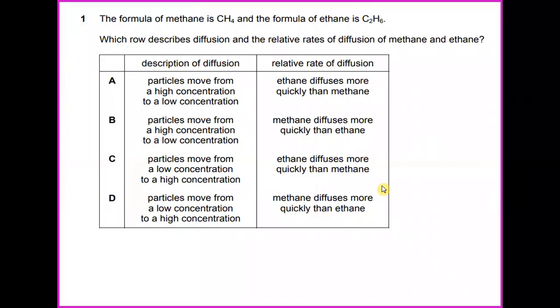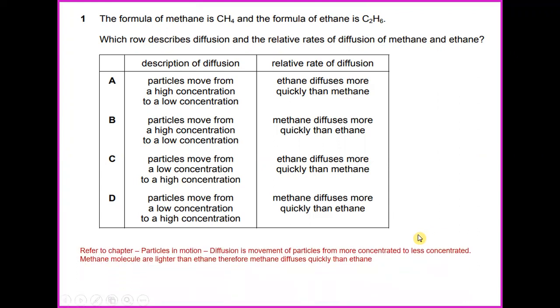Question number 1. The formula of methane is CH4 and the formula of ethane is C2H6. Which row describes diffusion and the relative rates of diffusion of methane and ethane? Refer to chapter particles in motion. Diffusion is a movement of particles from more concentrated to less concentrated. Methane is a molecule lighter than ethane. Therefore, methane diffuses quickly than ethane. So the answer for number 1 should be B. Particle moves from high concentration to a low concentration and relative rate of diffusion. Methane will diffuse more quickly than ethane.